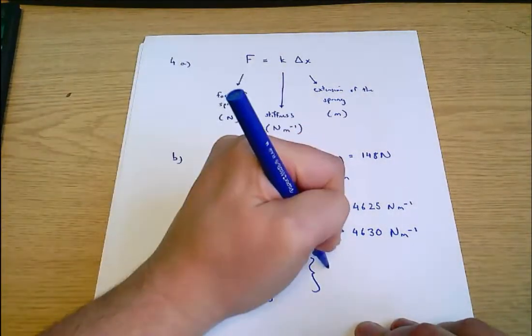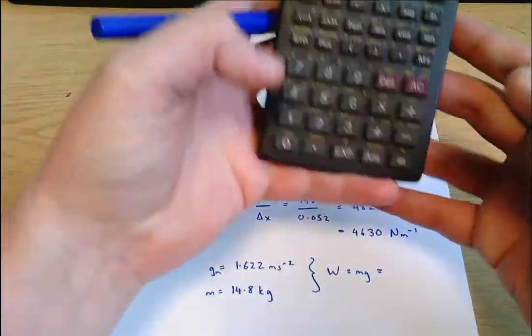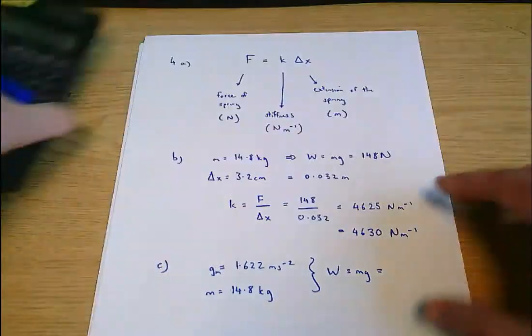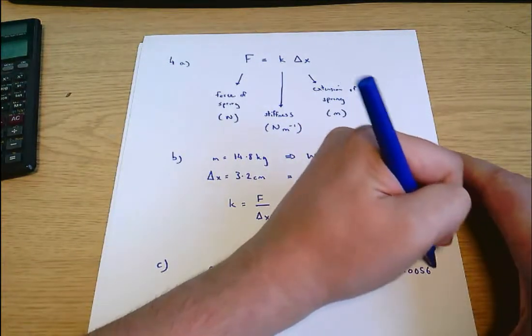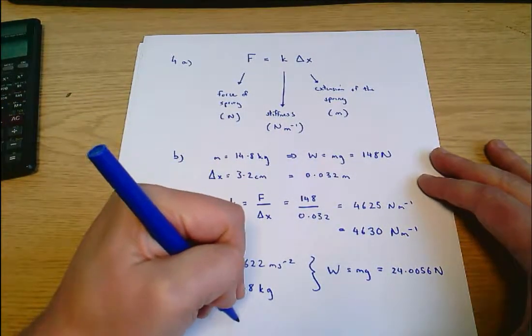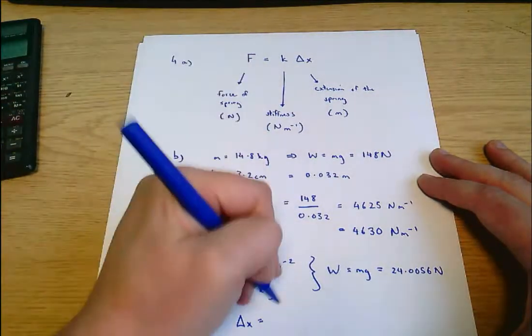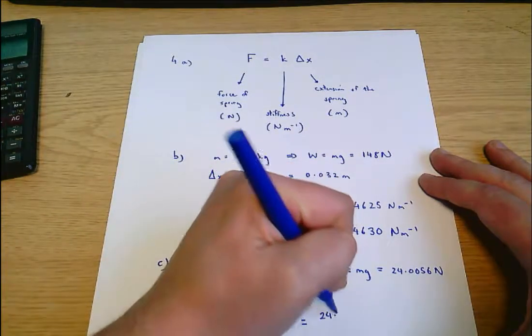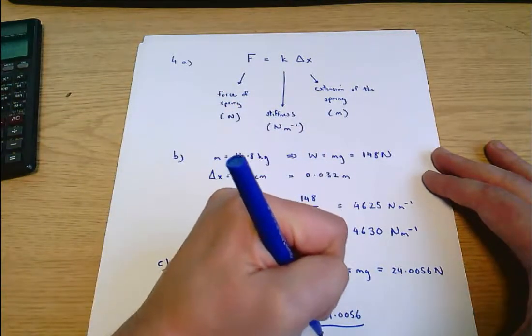Well we still know the same rules apply. Weight equals mass times gravity equals 14.8 times 1.622. 24.0056. So delta x dividing both sides now by k equals F over k equals 24.0056 divided by our calculated stiffness of 4630.